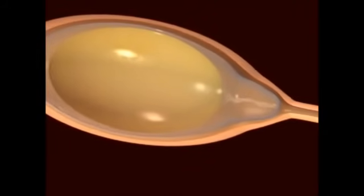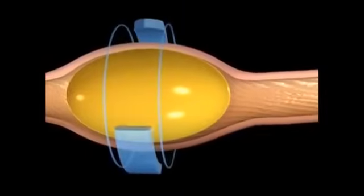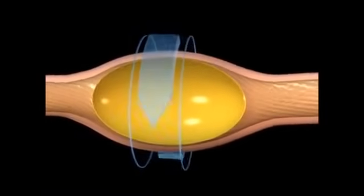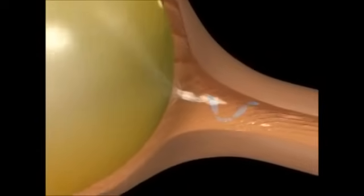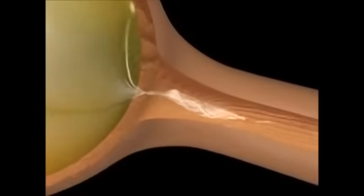As the albumin forms around the yolk, spiral ridges, which run the length of the magnum, cause the yolk to spin like a bullet in a rifle barrel. This spinning twists the protein fibers in the albumin just in front of and just behind the yolk, and makes two pigtail-like structures, called the chalaza.